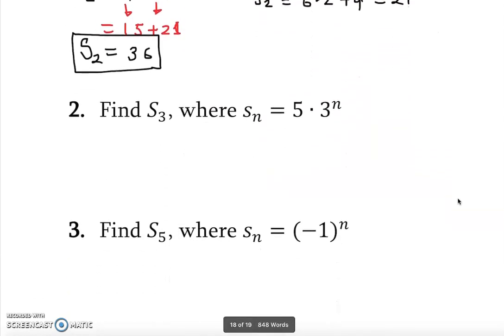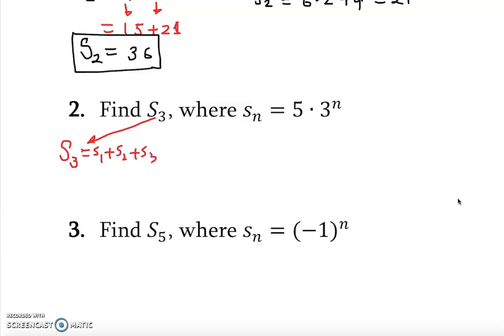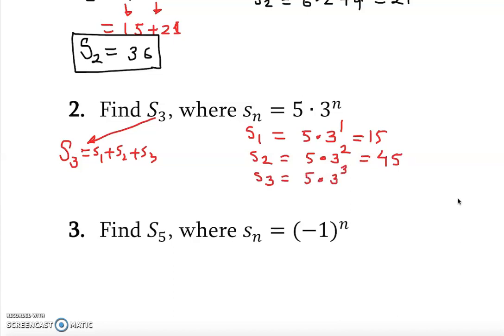Let's do another one. This time it's S₃, so S₃ = s₁ + s₂ + s₃. Can we figure those out? Yes. On the right side: s₁ = 5 × 3¹ = 15, and s₂ = 5 × 3² = 45.